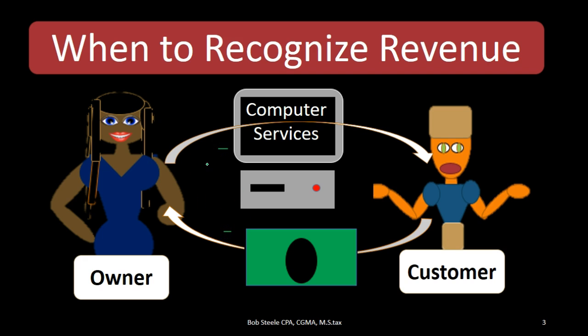You may be thinking that's a subtle difference — what does it really matter? Well, it's important because there could be situations where we don't get the cash at the same point in time. It's also important for us to understand the principle because the same principle, or a similar format of it, is going to be applied to things like the expense side when we get to the matching principle.